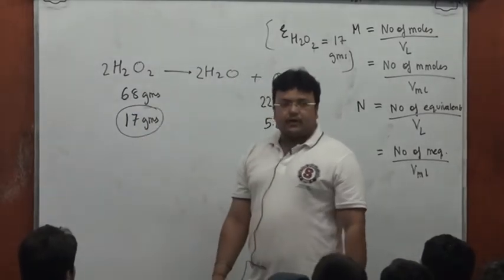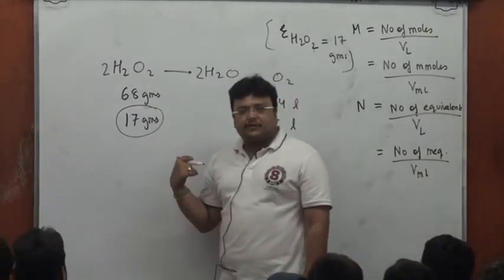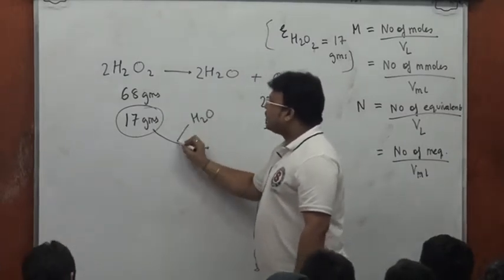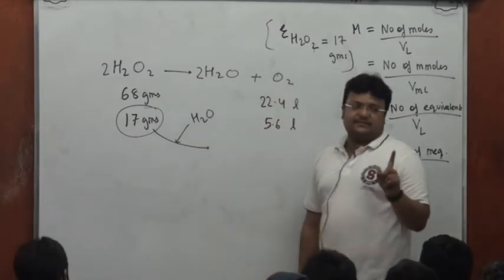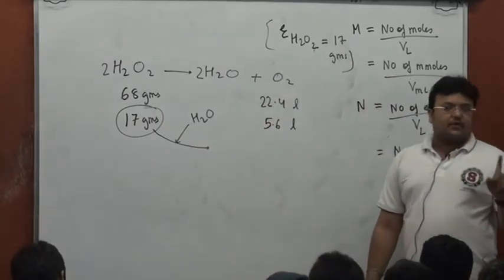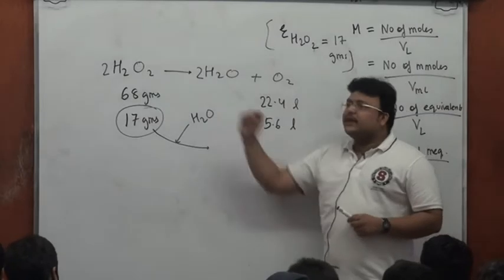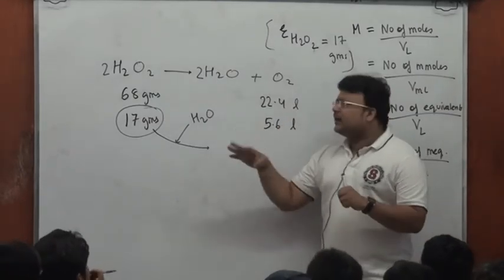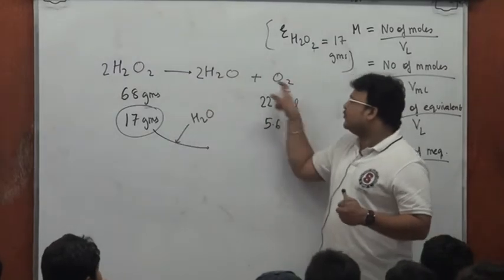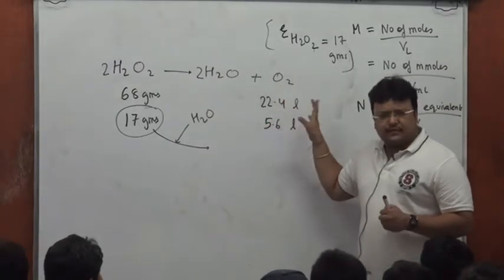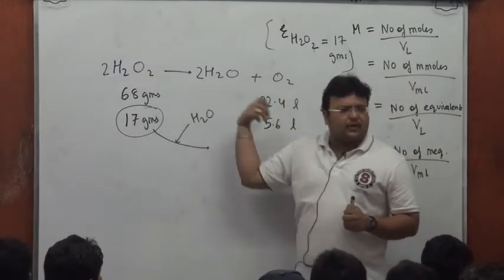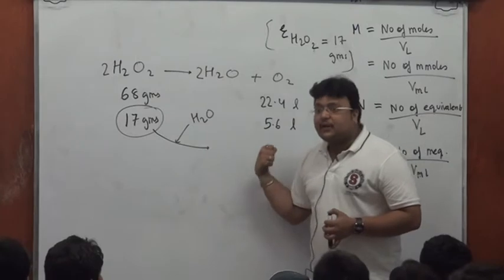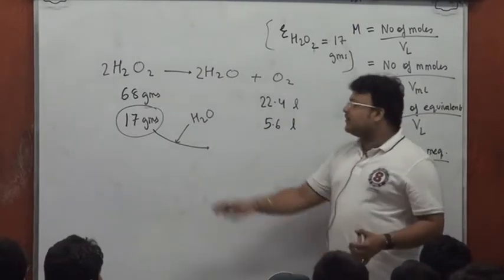You will want to take 17 grams of pure H₂O₂ and add enough water to make it one liter. Going by stoichiometry, 68 grams gives one mole, which is 22.4 liters at NDP — that's the molar volume. So 17 grams will give you 5.6 liters.